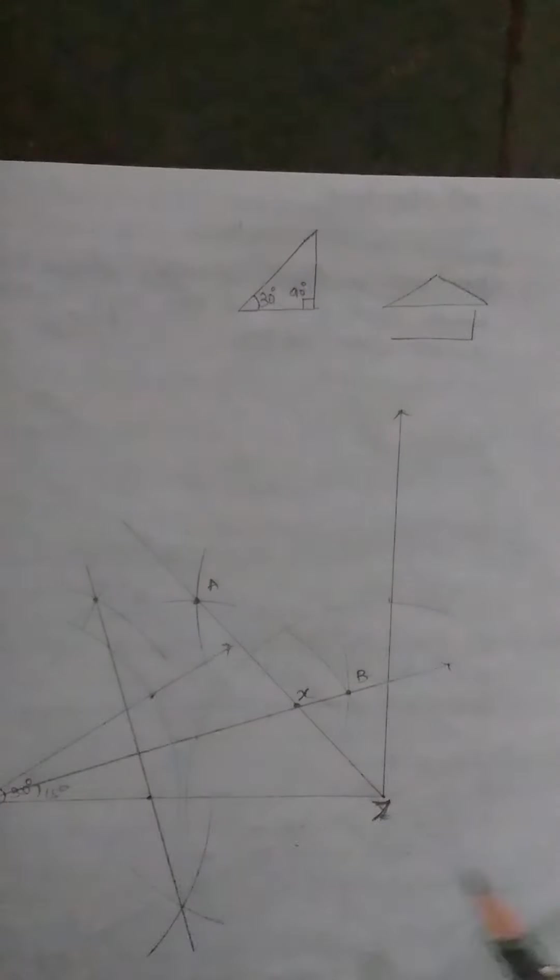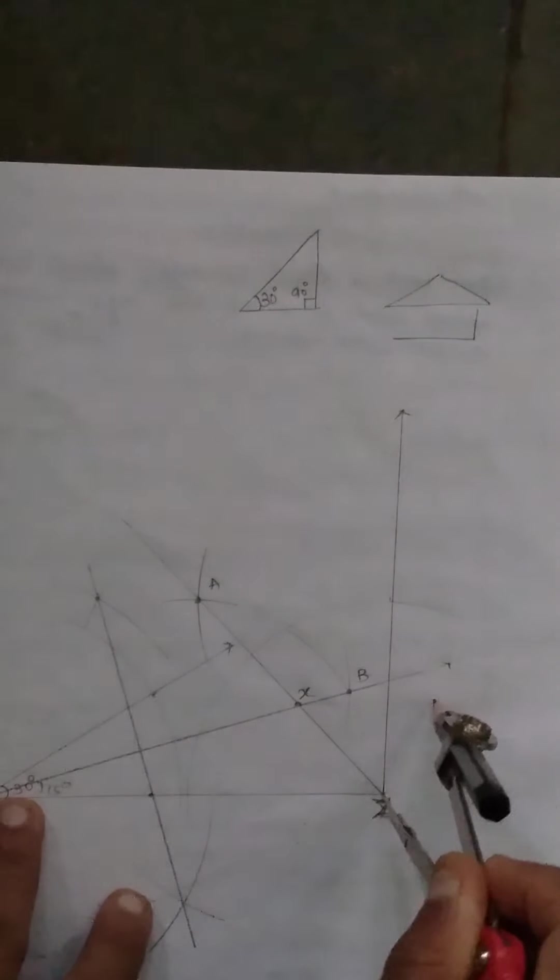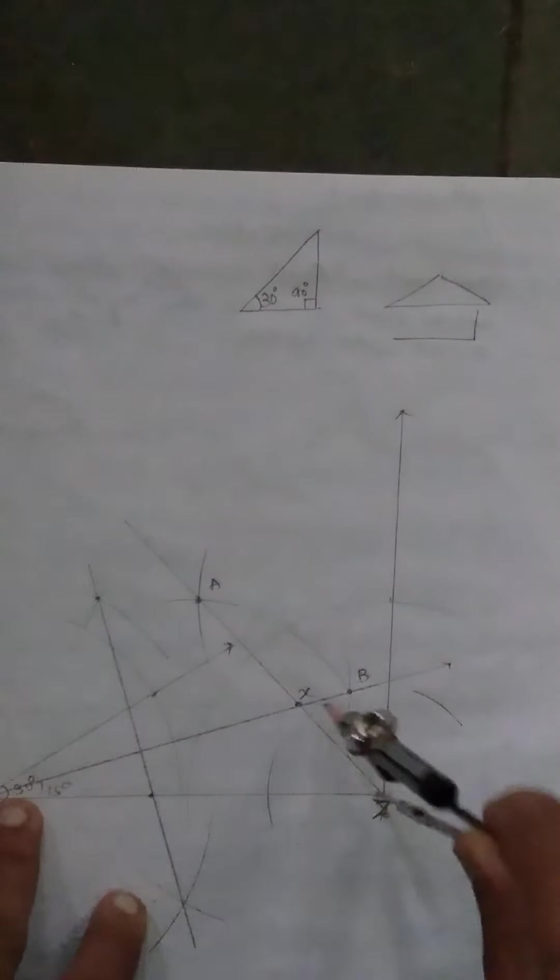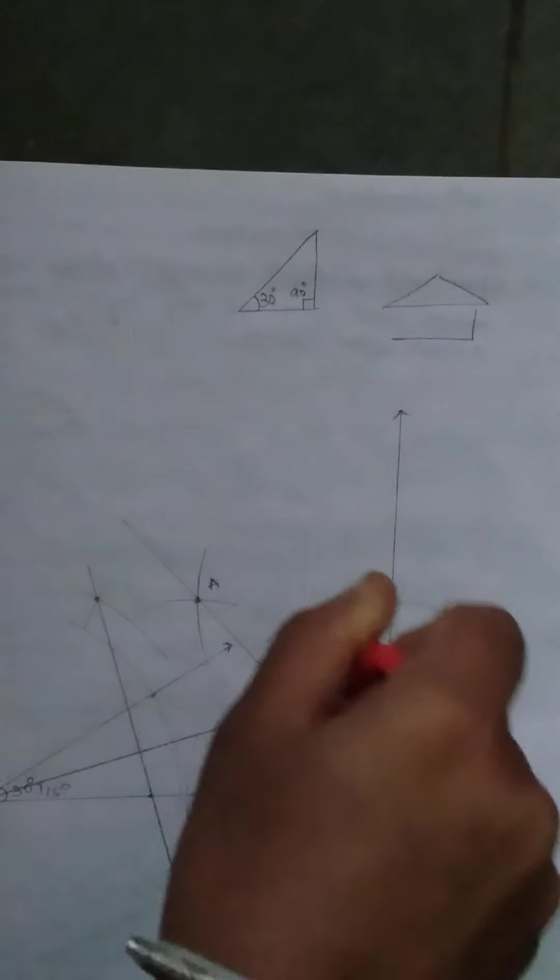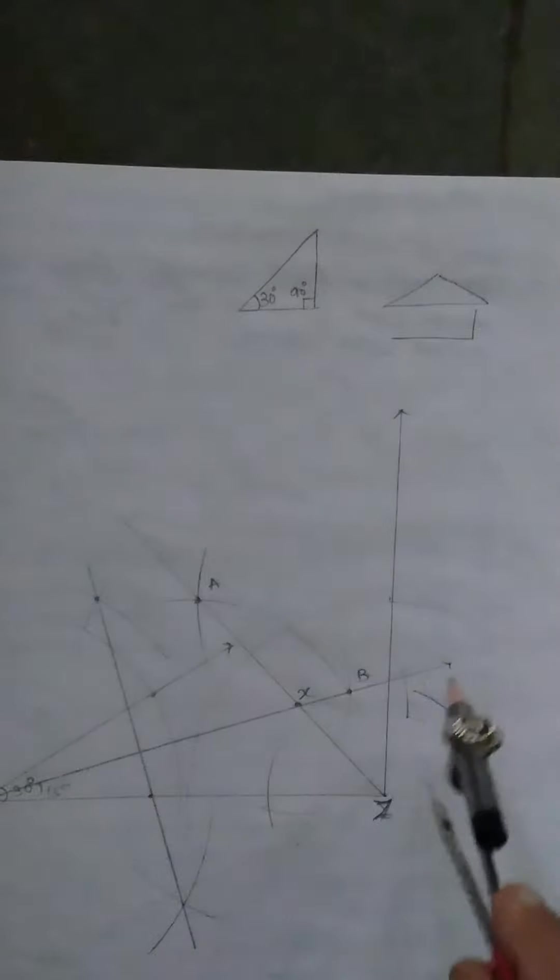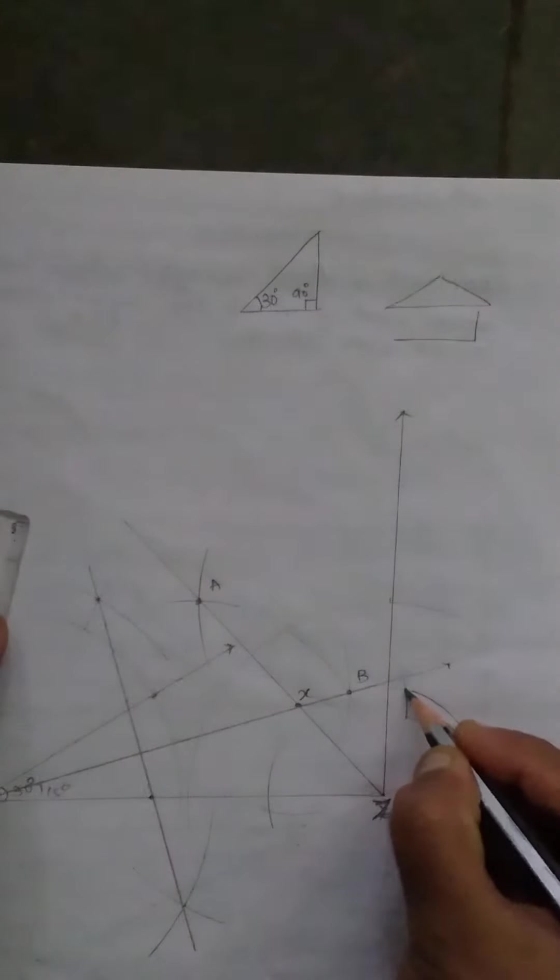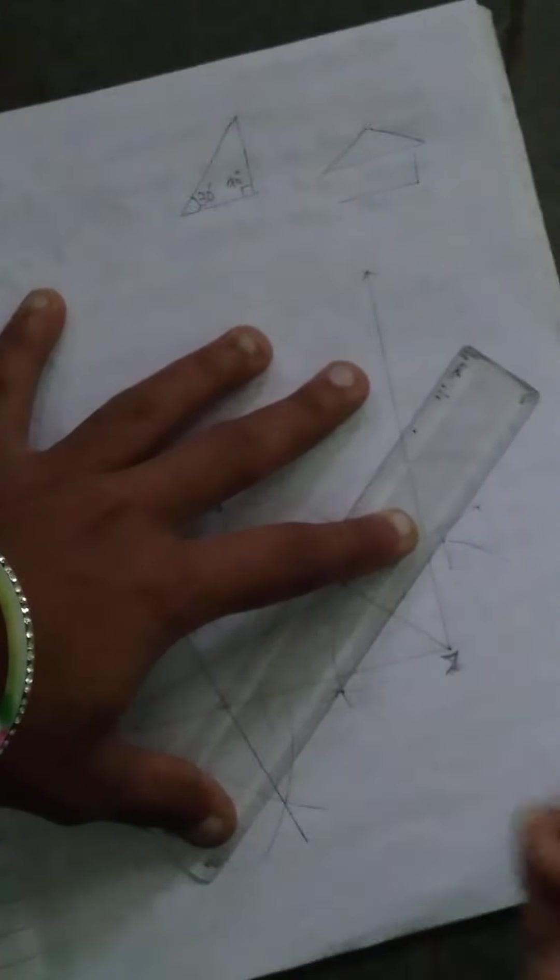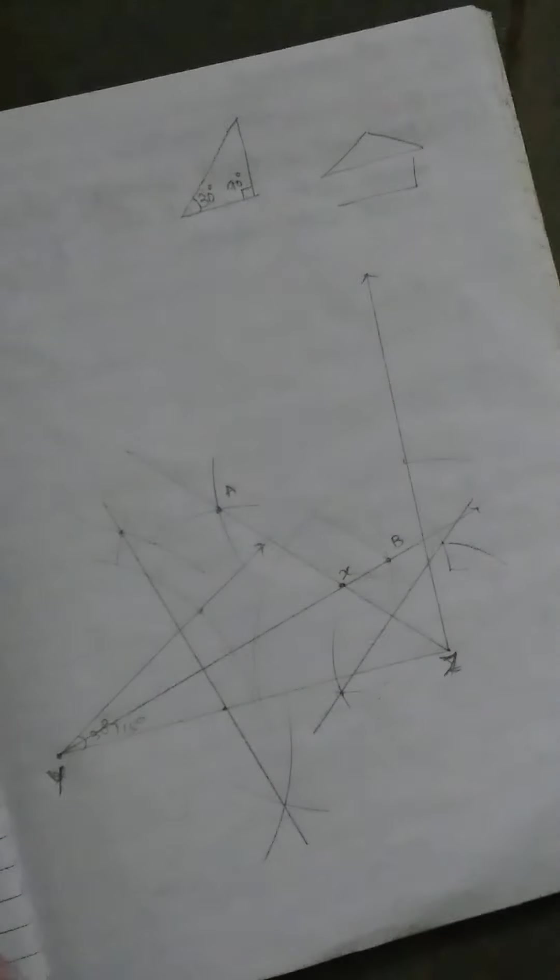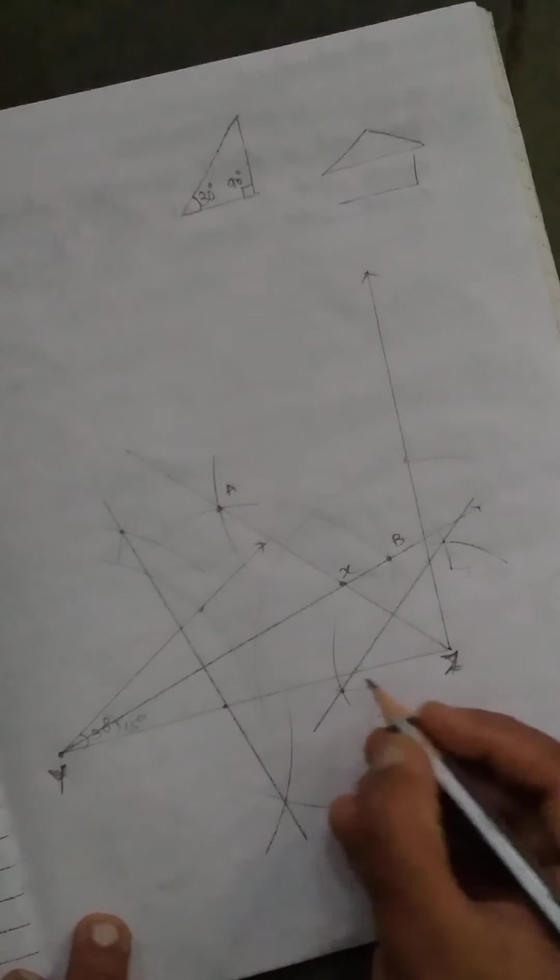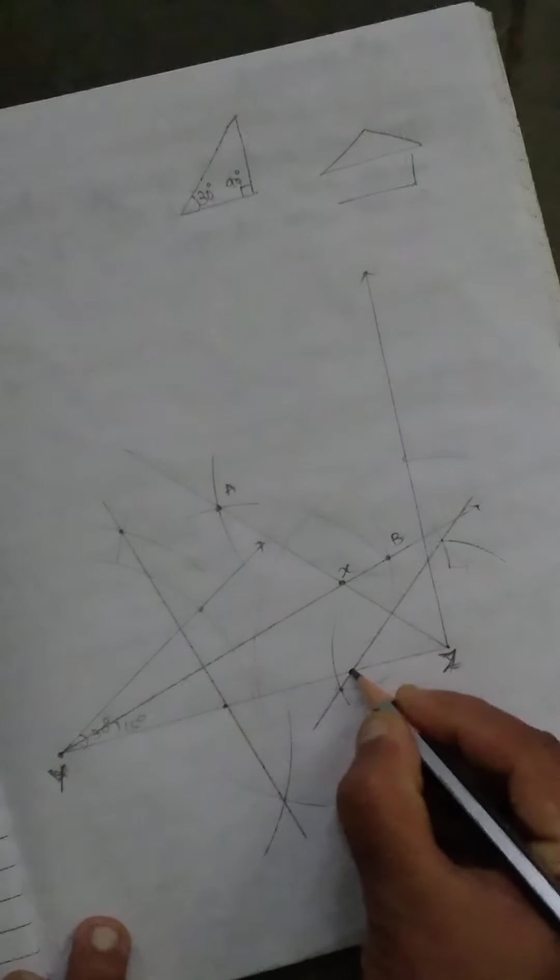Bisect this XZ line. Draw an arc and join this line. Join this perpendicular line. While joining this perpendicular line, this perpendicular line cuts here, cuts Y and Z line here.